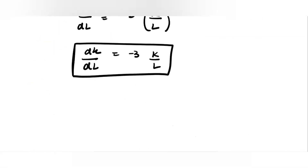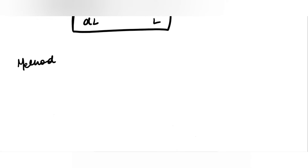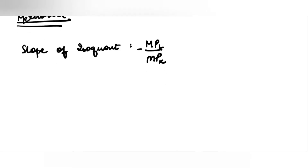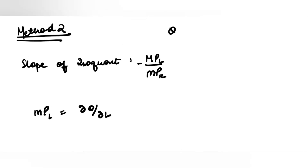Method 2: you can say that we know the slope of the isoquant is nothing but minus MPL by MPK. What is MPL? MPL is how output changes when labour changes. What is your production function?